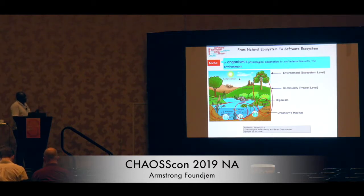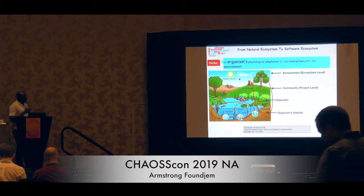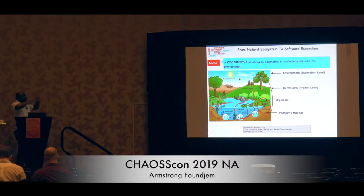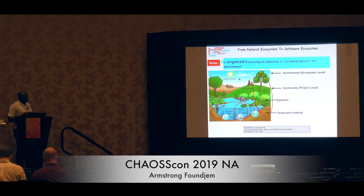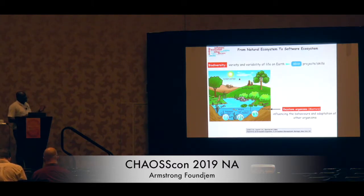That circle forms a habitat — like a home — for the fungi to survive. And that rotten wood cannot exist if a tree has not fallen. So you see it builds a community, which is like the level of a software project. What is this organism? It is about physiological adaptation and interaction with the environment, and how the physical structure of that organism interacts with the environment.